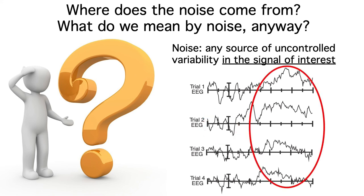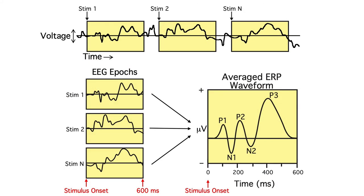There's also trial-by-trial variability in the actual neural response to the stimulus. If we don't experimentally control this variability, then it's considered noise. Keep in mind that averaging is a pretty simplistic way of dealing with noise. ERP researchers also use a variety of more sophisticated ways of dealing with things like alpha band oscillations and trial-by-trial variations in ERP responses. But these methods have their limitations as well, so averaging is still the most common way of dealing with noise.